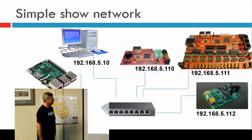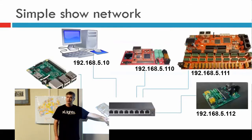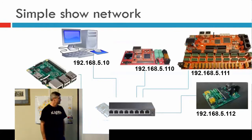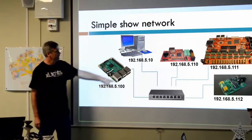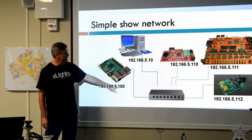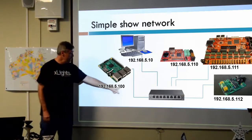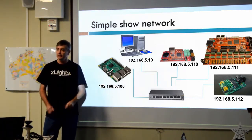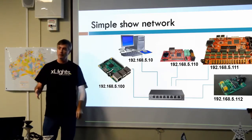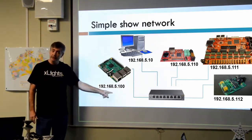A simple show network — notice there's no router, there's a switch. You generally don't need a router to run a show network; a switch is just fine. You can pick them up for 50 or 80 bucks, or get gigabit ones from China for about 10 bucks. I'm using 192.168.5 as my subnet, and each device has an IP address within that subnet. The numbers themselves don't mean anything — you can use any number you like, there's no reason the gateway has to be .1. But they do have to be unique.